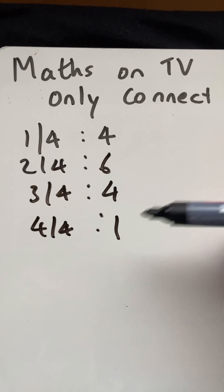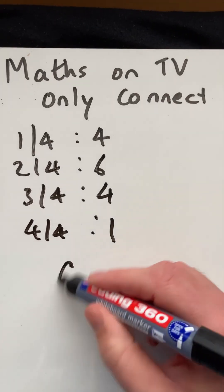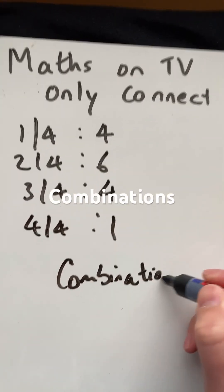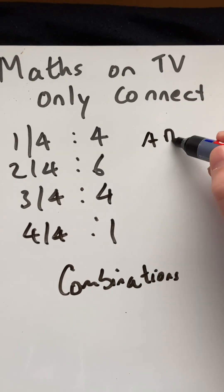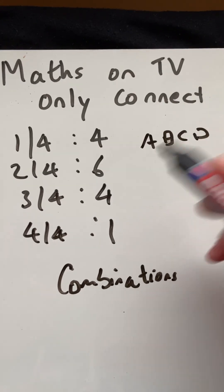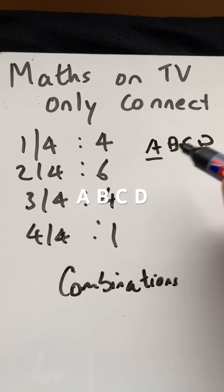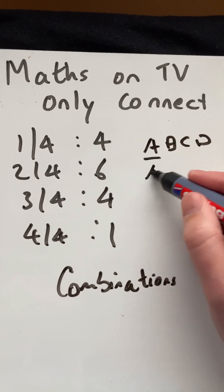Well, actually it's combinations. So if I have four items - A, B, C, and D - there's four ways I could take one of them out.